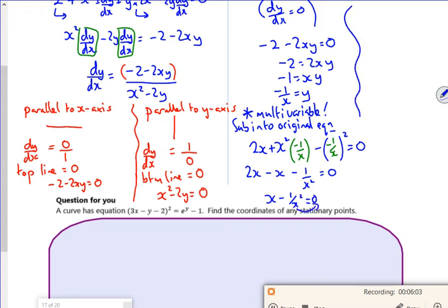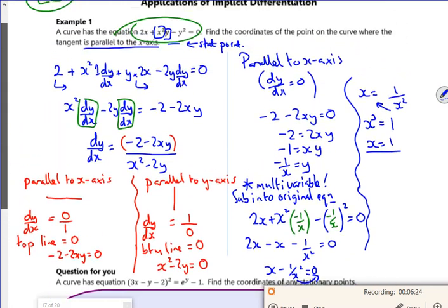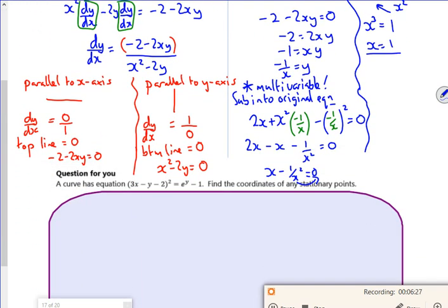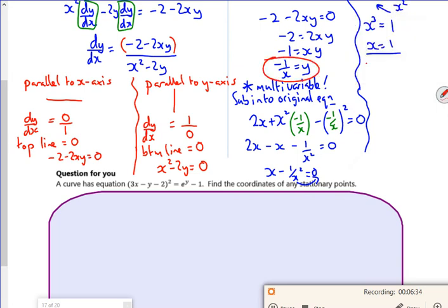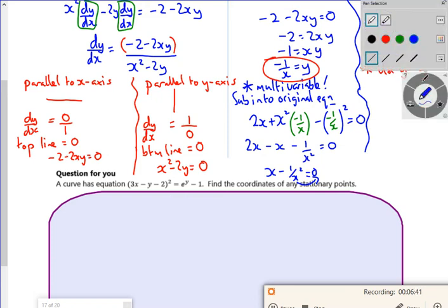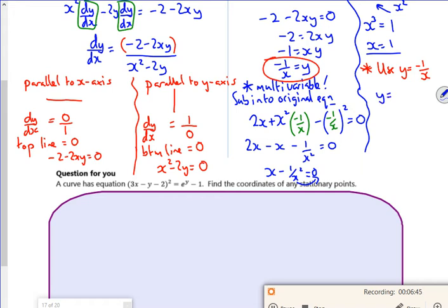So if I take the 1 over x squared over, I've got x equals 1 over x squared. If I take the x squared up, I've got x cubed equals 1, so x is 1. Now I want to find the coordinate, I want to sub it back in. Now I've got a choice: I could use the original big equation or I could use this sneaky equation which I've just made. So I'm going to use y equals minus 1 over x because I want the coordinates. So that must mean y is minus 1. So my coordinates for the stationary point are 1 comma minus 1.